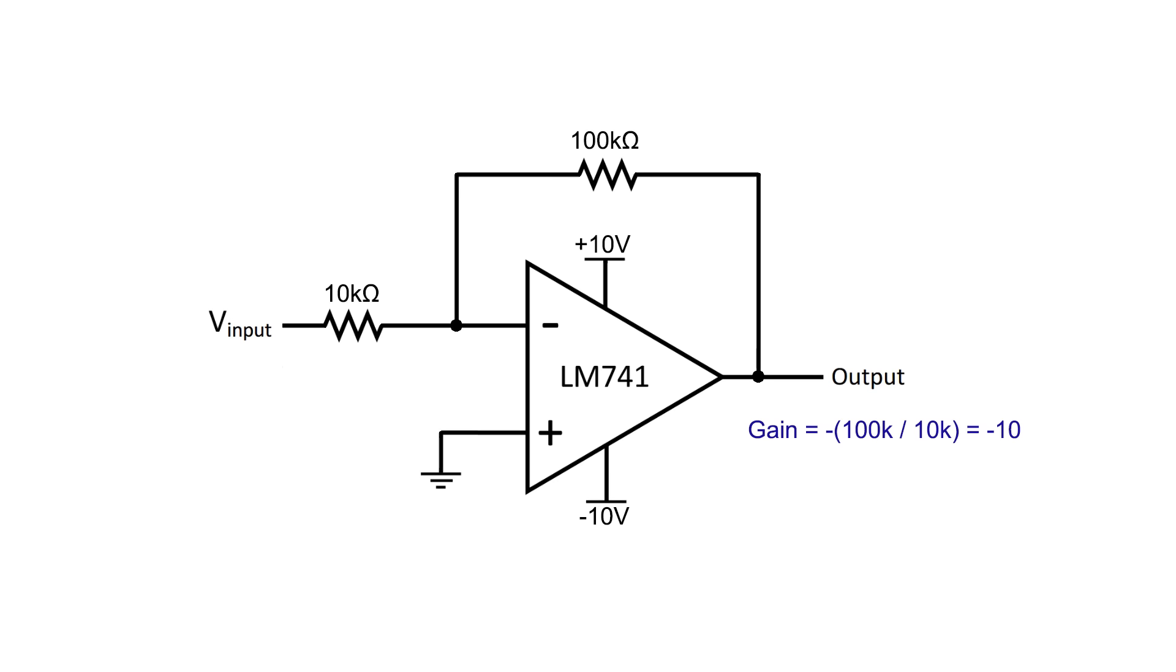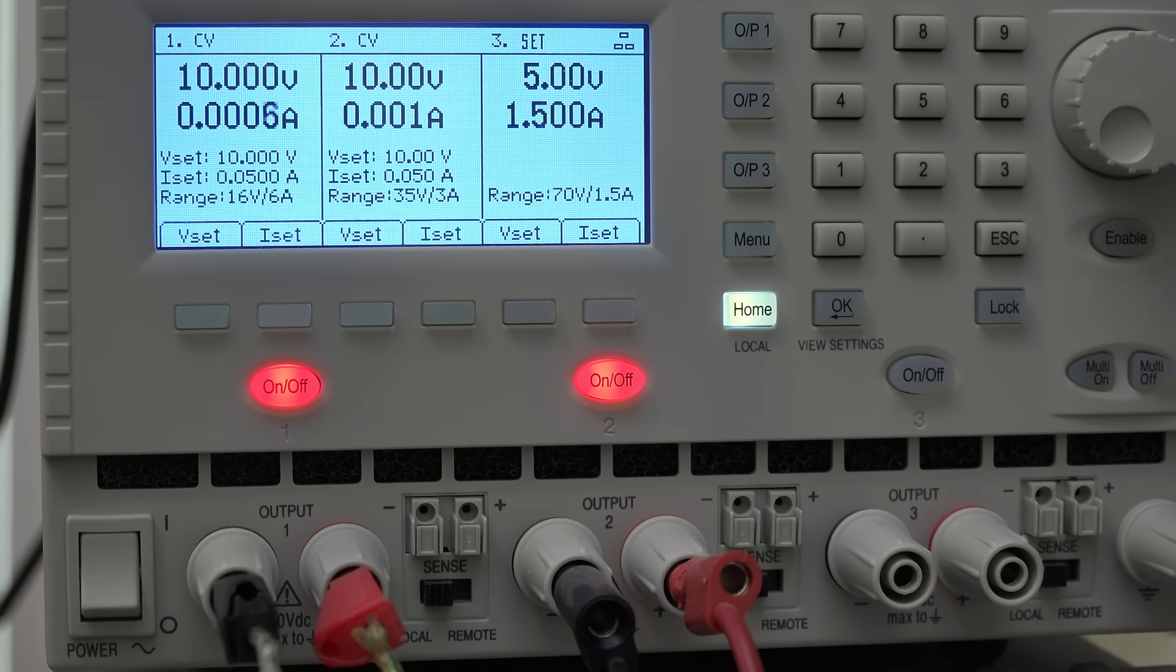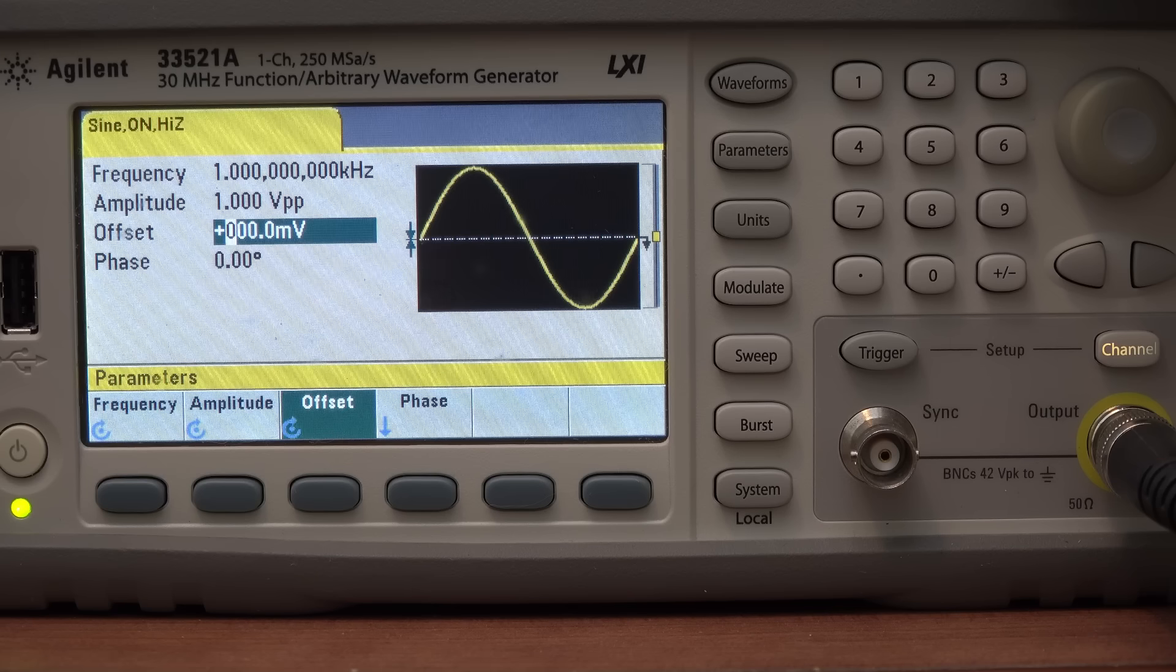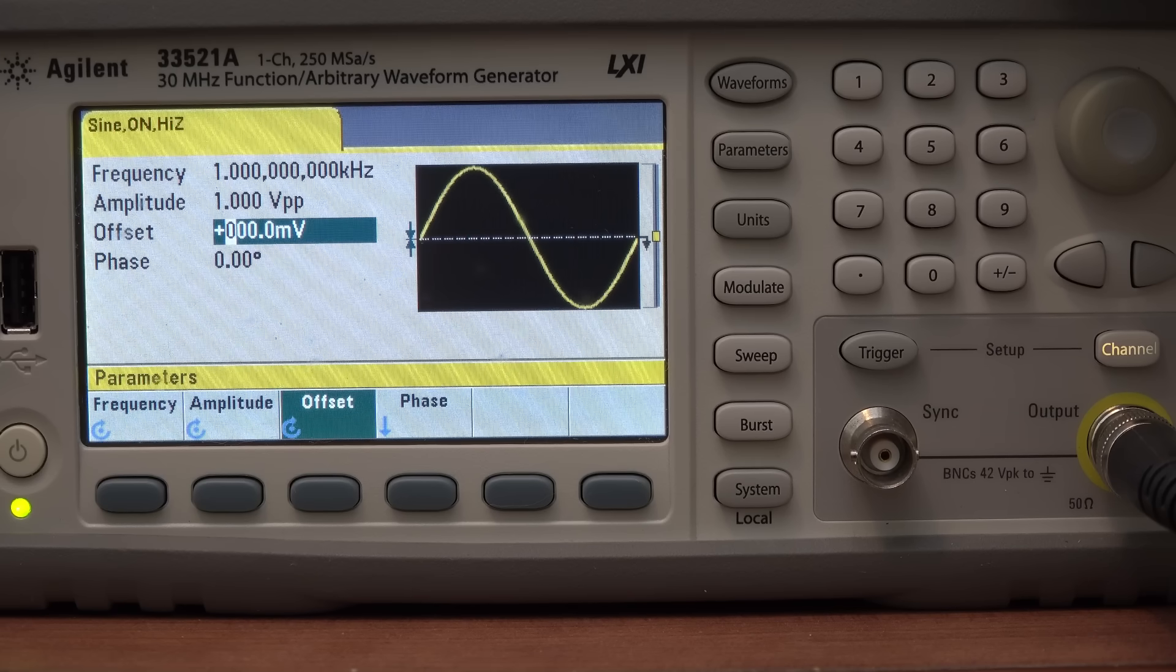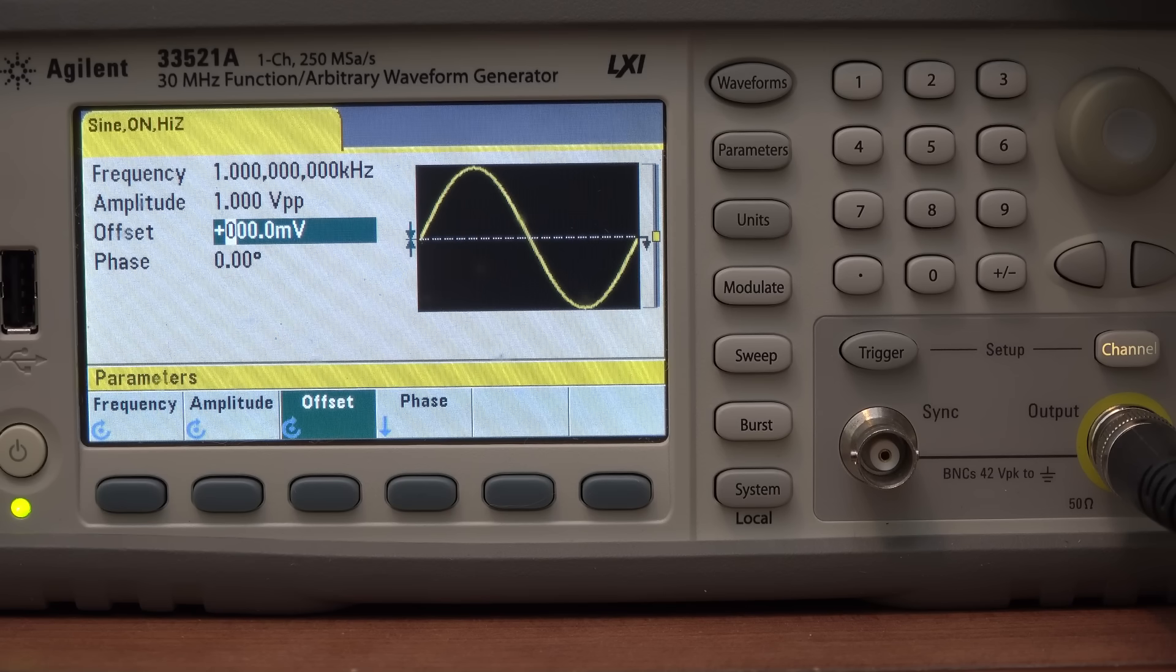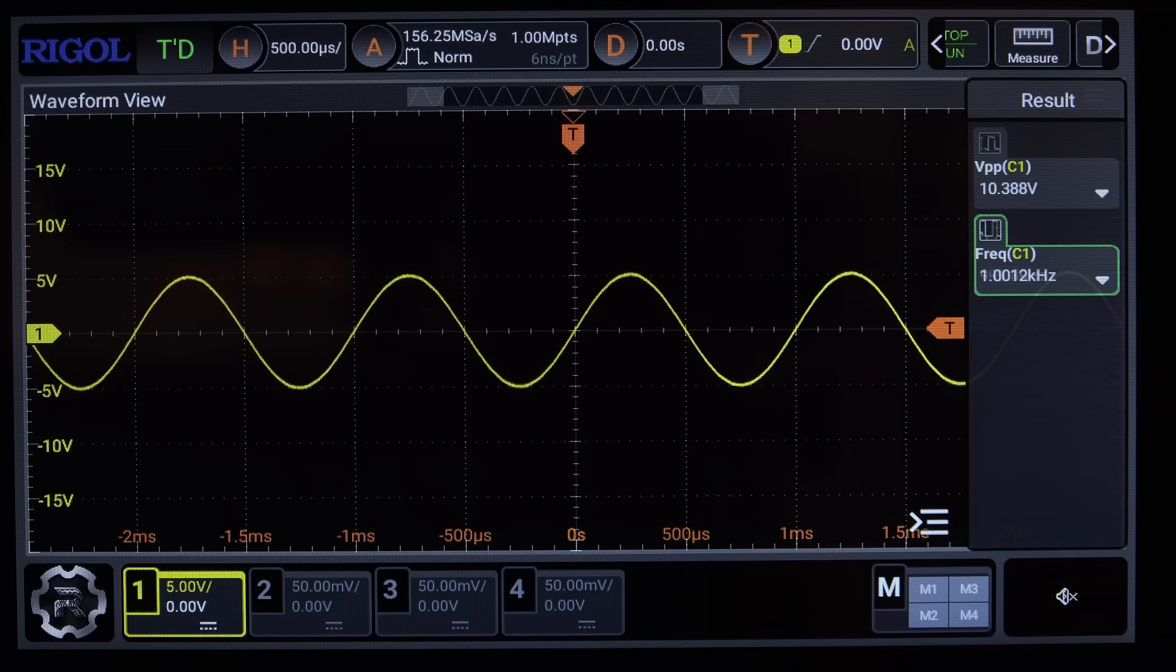Here I have an LM741 configured as an inverting amplifier with a gain of 10. The power supply is set to plus and minus 10 volts, which meets the 20 volt minimum requirement. And I'm using my waveform generator to inject a 1 kHz, 1 volt peak-to-peak sine wave into the amplifier circuit. Since the amplifier has a gain of 10, 1 volt on the input should give us a 10 volt sine wave on the output. And as expected, it does. It's very nice actually.